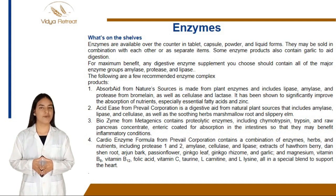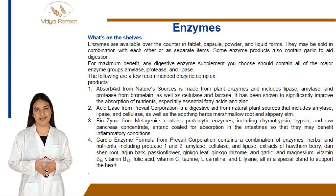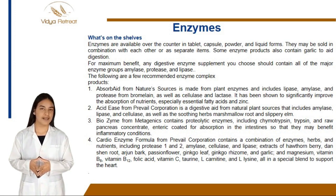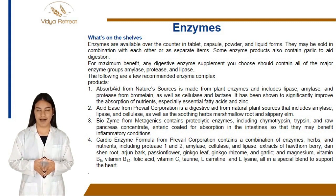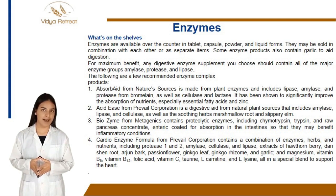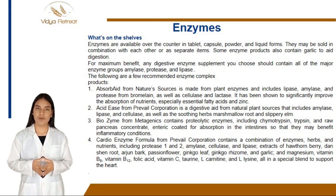Cardio Enzyme Formula from Prevail Corporation contains a combination of enzymes, herbs, and nutrients, including protease one and two, amylase, cellulase, and lipase. Extracts of hawthorn berry, dandelion root, arjun bark, harshan flower, ginkgo leaf, ginkgo rhizome, and garlic, and magnesium, vitamin B6, vitamin B12, folic acid, vitamin C, taurine, L-carnitine, and L-lysine — all in a special blend to support the heart.